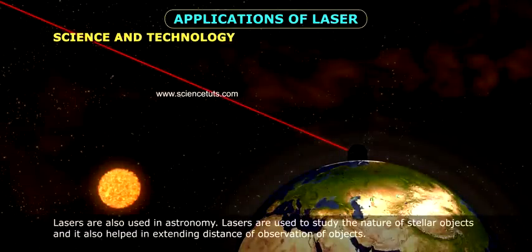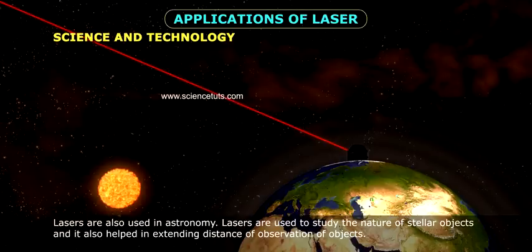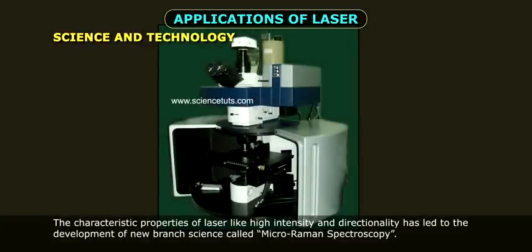Lasers are also used in astronomy. Lasers are used to study the nature of stellar objects, and it also helped in extending distance of observation of objects. The characteristic properties of laser, like high intensity and directionality, has led to the development of new branch science called Microraman spectroscopy.